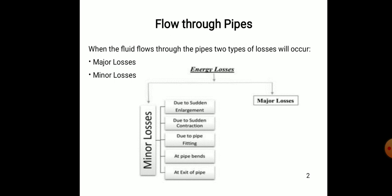Major losses generally occur due to friction in the pipe and ducts, whereas minor losses occur due to local disturbances of the flow in the conduit such as changes in cross sections, projecting gaskets, elbows, valves and similar items. Major losses are the head losses due to the friction factor and pipe diameter, and can also vary depending upon the type of pipe used.